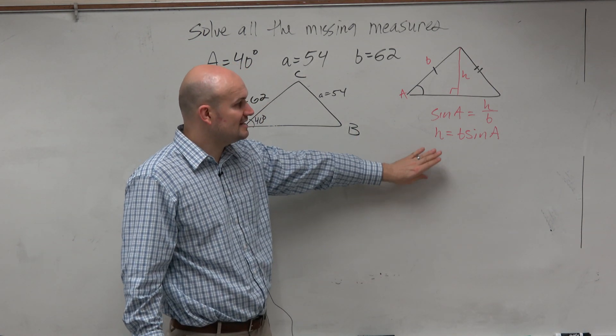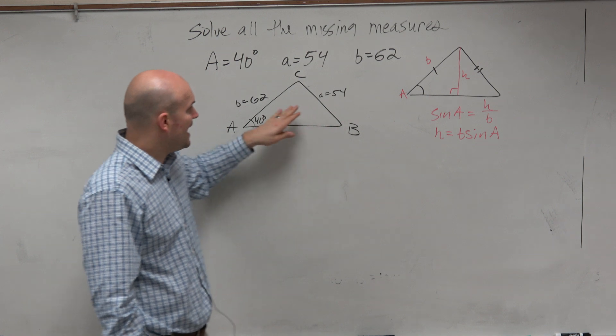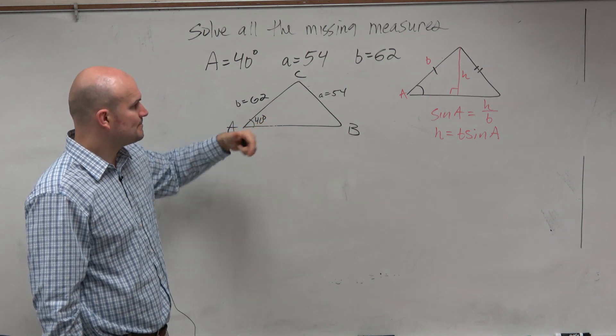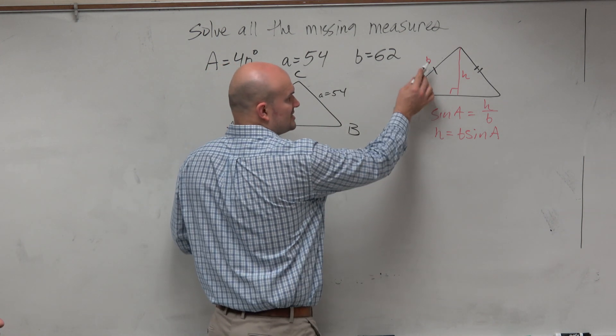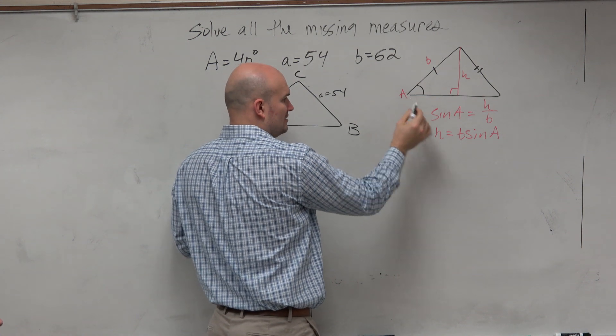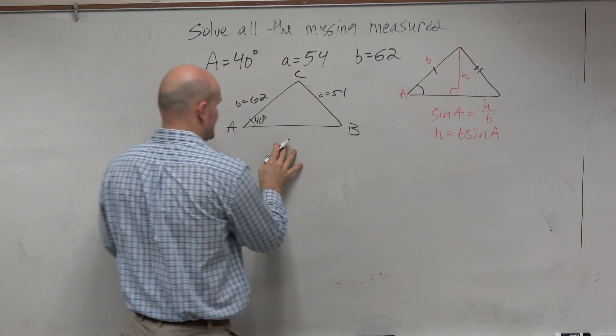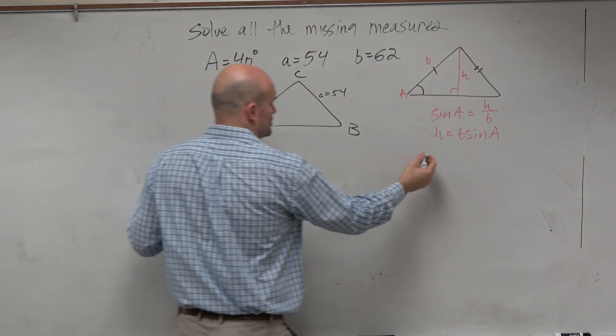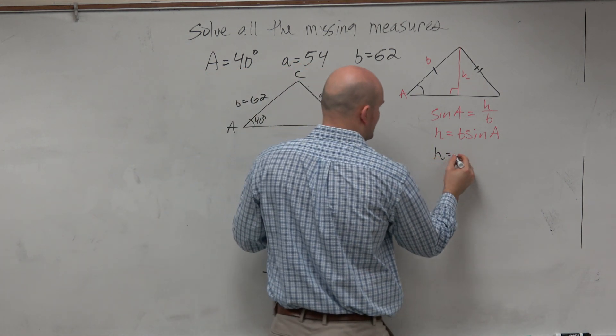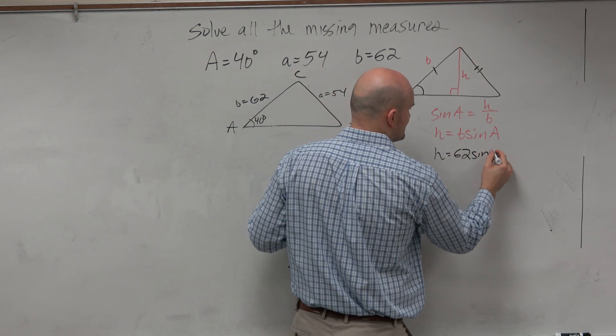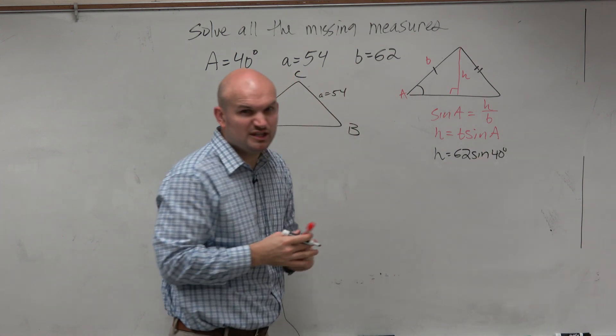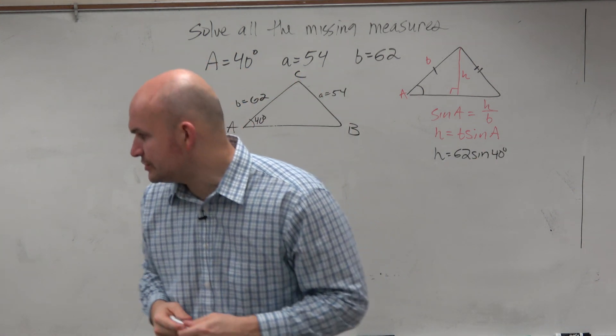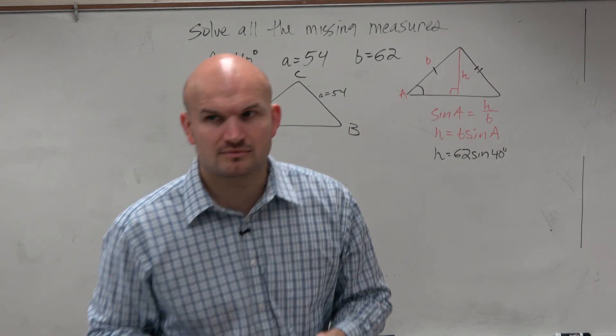However, the height is helpful when we have this case, because if I know the height is really just the near side times the angle, I can say this height for this problem is just going to be 62 times the sine of 40 degrees. That's really quick and easy and fast for me to type into my calculator.